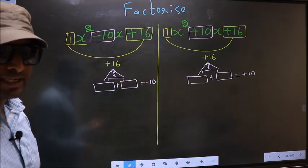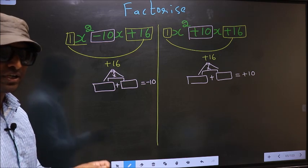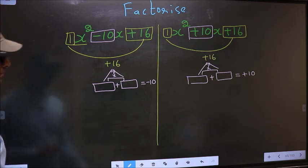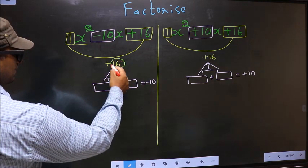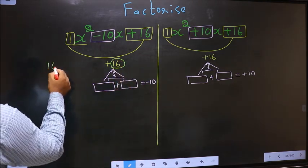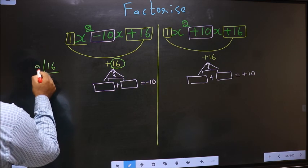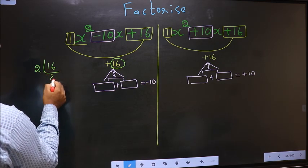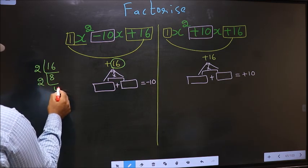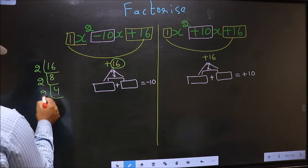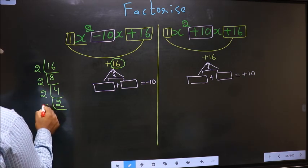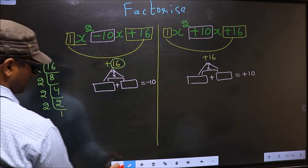To get those two numbers, we should take the LCM of 16. 16 is 2 eights, 8 is 2 fours, 4 is 2 twos, and 2 is a prime number so 2 ones are 2.